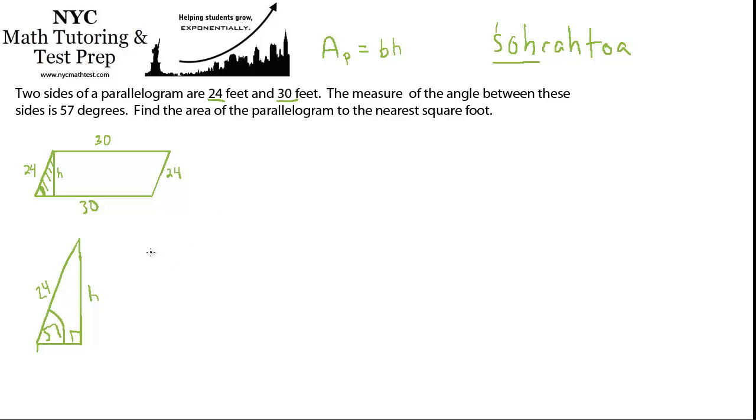So sine of the angle of 57 equals opposite over hypotenuse, which is H. That's what we're after. Over 24. So we can solve this for H, right? Multiply by 24 on both sides. So if we multiply by 24 on both sides, we get 24 times sine of 57. And I put that into my calculator, and I got 20.128.